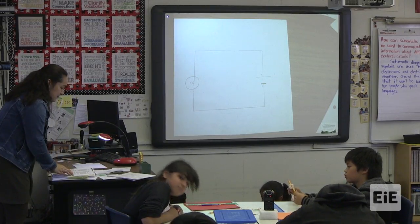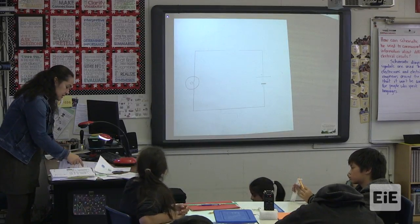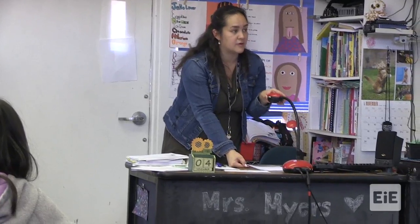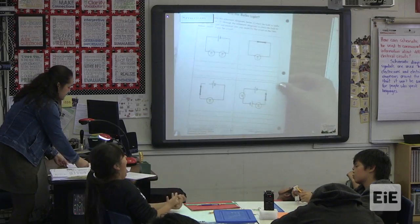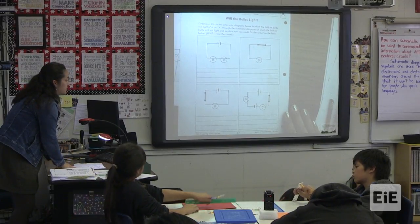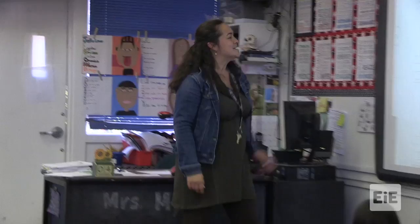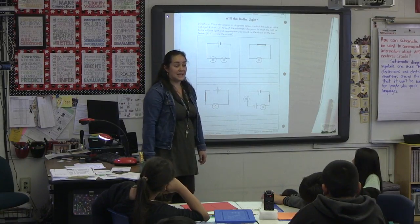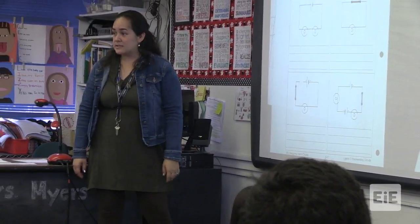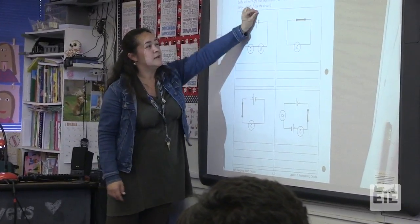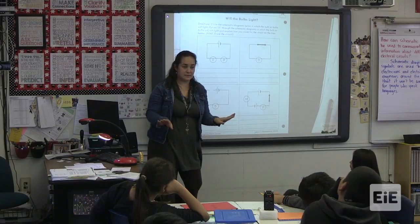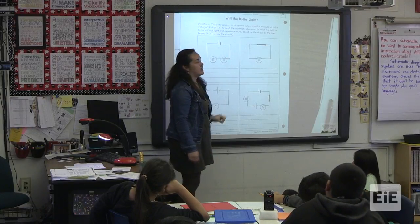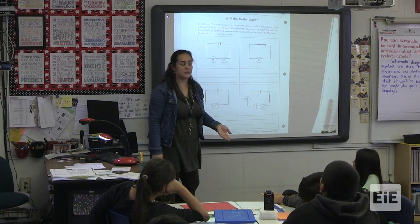The last thing I'm going to do is have you take a look at your worksheet from earlier. You had this on one side, which you completed the schematic diagram for. If you turn it over to the other side, there's a quick activity for your group. You're going to look at each schematic diagram and decide whether it is going to light or not. If you think it will light, circle it. If you think it won't light, put an X through it, and explain what you need to do to make the bulb light.